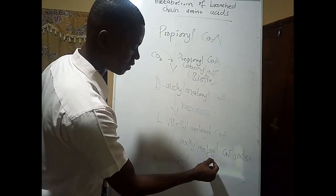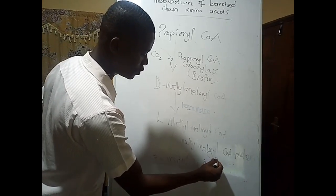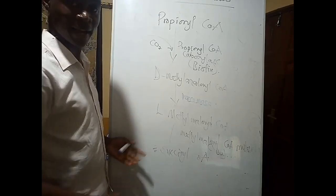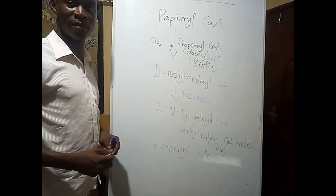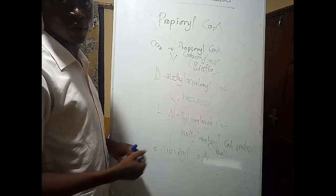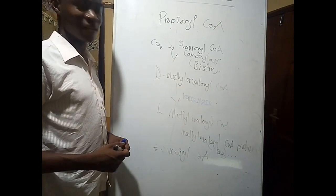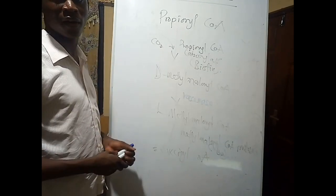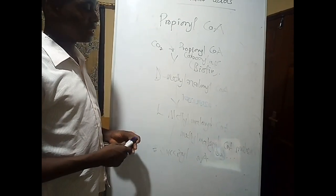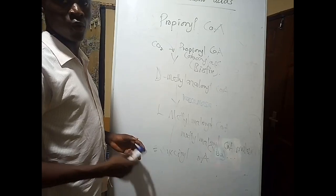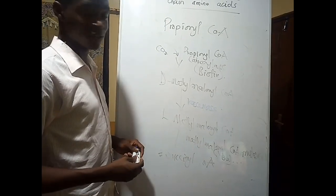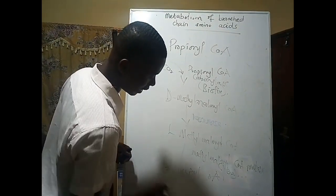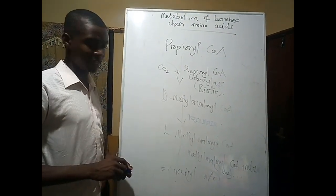The methylmalonyl-CoA mutase enzyme also requires vitamin B12 to work well. This succinyl-CoA can enter the Krebs cycle, where it is converted to succinate, then fumarate, then malate, and eventually oxaloacetate. As it goes along, FADH2 and NADH are generated, which can move into the electron transport chain and help generate ATPs.